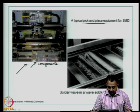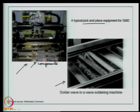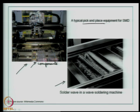Here you can see a solder wave in a wave soldering machine — a wave is generated from a mother tank containing molten solder. Because the solder is exposed to air, there can be a lot of oxidation, so you must continuously remove oxides from the molten bath; otherwise oxides will be transferred onto your solder joints. Wave soldering requires good maintenance of the parameters and the material.